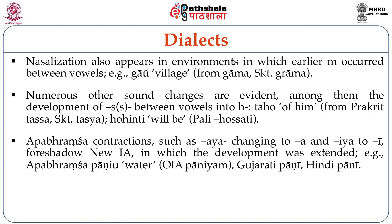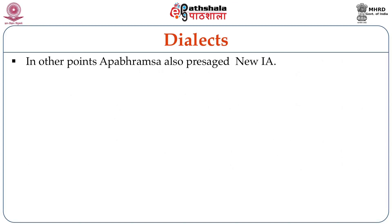Apabhramsha contractions such as AYA changing to A, IYA changing to E, foreshadow New Indo-Aryan in which the development was extended. For example, Apabhramsha pani-u (water) from Old Indo-Aryan paniyam — but in Gujarati pani and Hindi pani. In other points, Apabhramsha also presages New Indo-Aryan. The interest of Apabhramsha lies in the fact that contracted forms presage the New Indo-Aryan opposition of masculine, neuter, and feminine nouns.